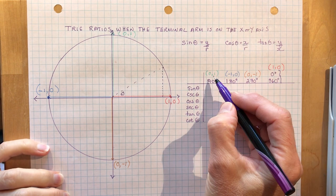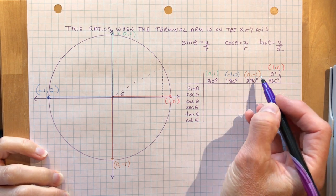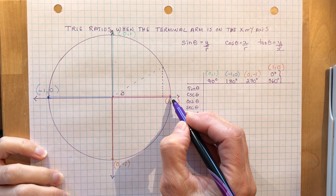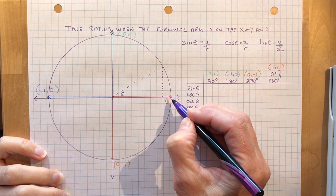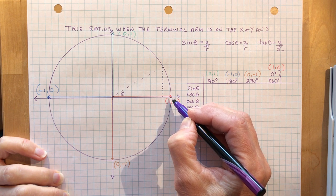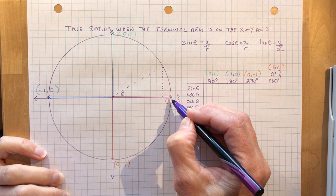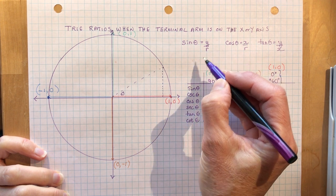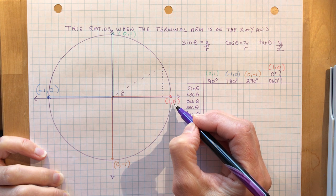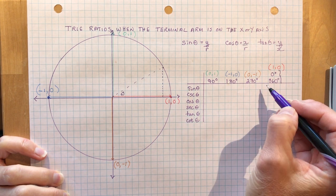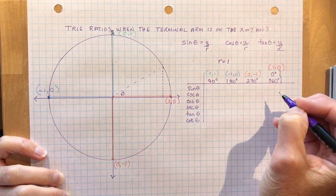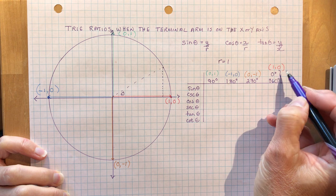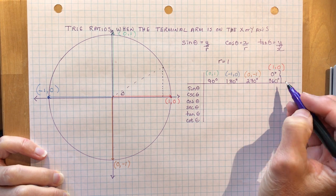So what happens when we have these points on the circle and we're at 90 degrees or at zero? We're going to start with zero. The coordinates when the terminal arm — that's the arm in red — is at this point: the sine would be Y over R, where Y is zero. The radius is always one, and these points are going to change depending on where we are around the circle.